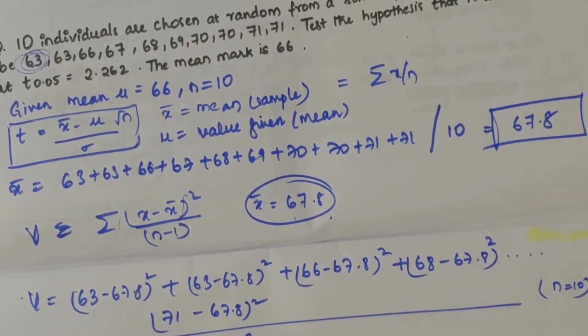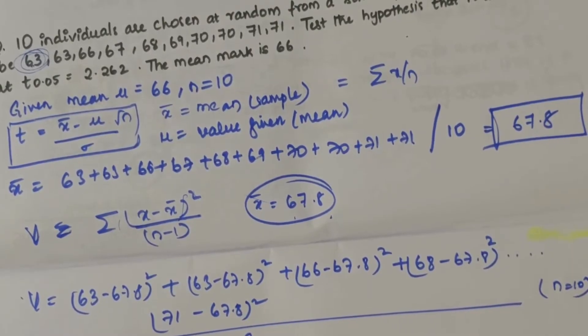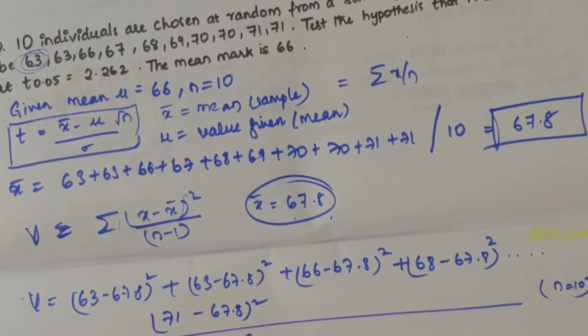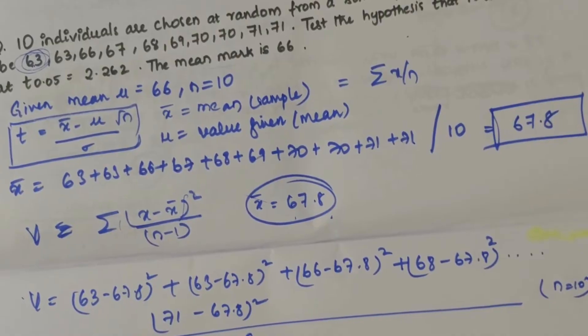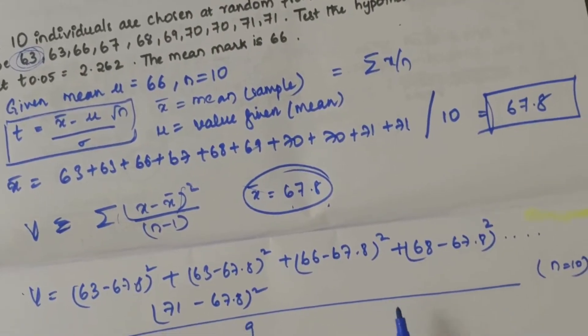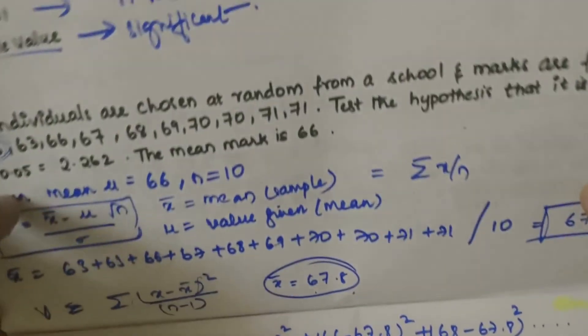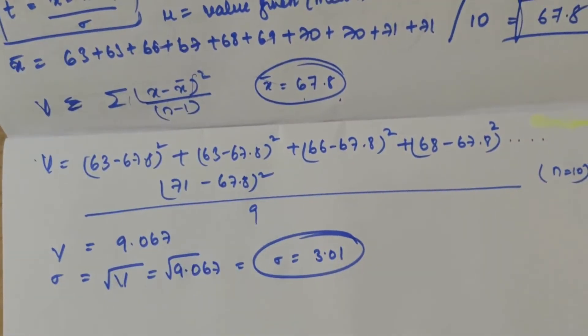If you solve this you get 9.067 as the V value. Here we need standard deviation sigma, that is under root of V, which would be under root of 9.067 equals 3.01. So we have found out the values of x̄ and standard deviation.